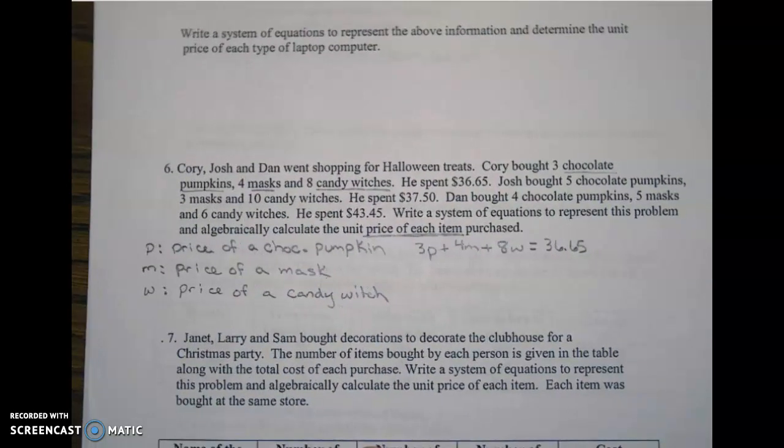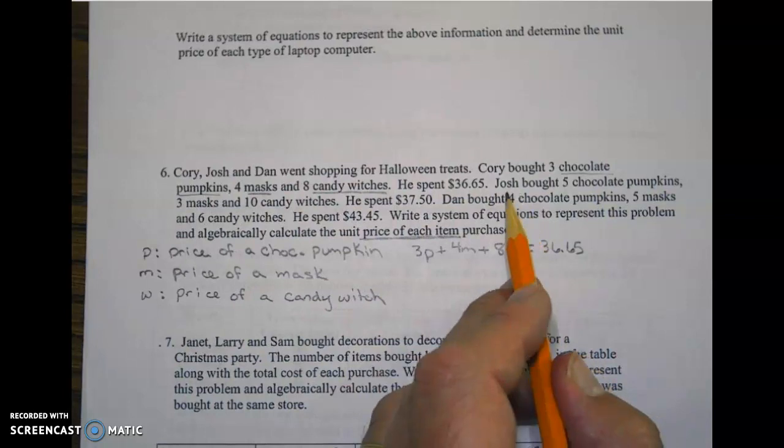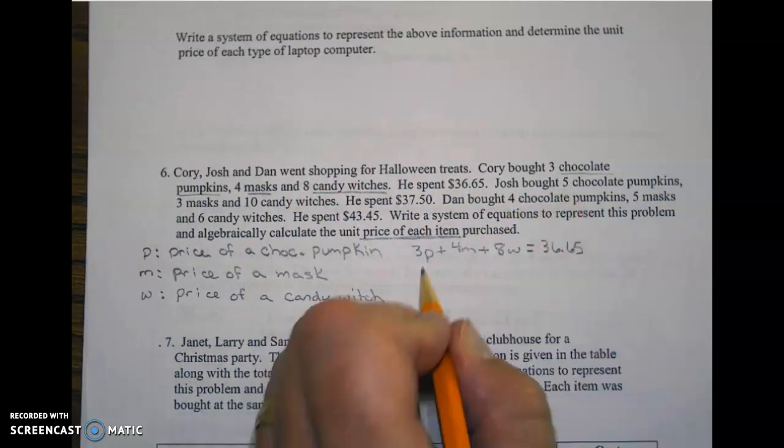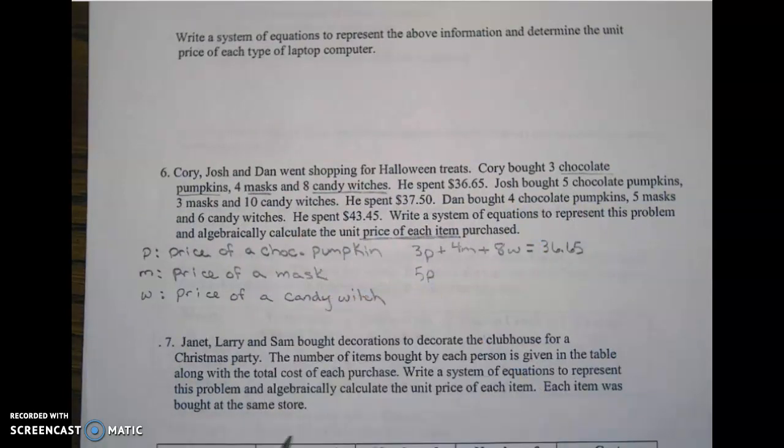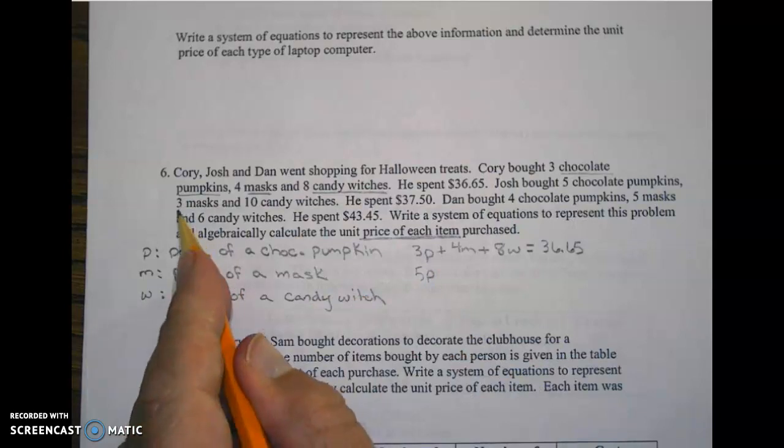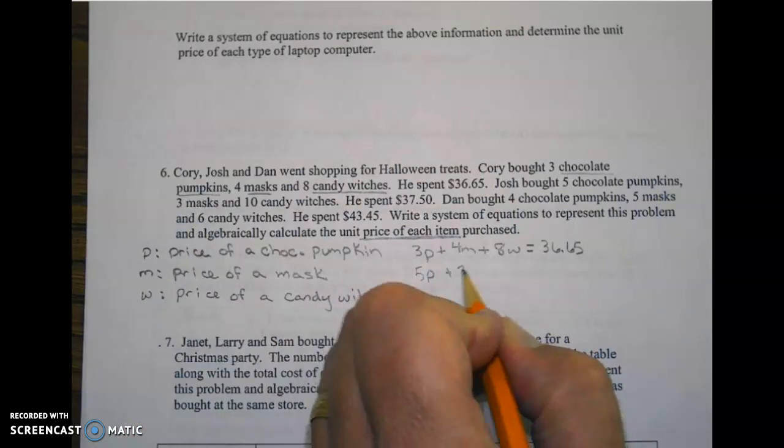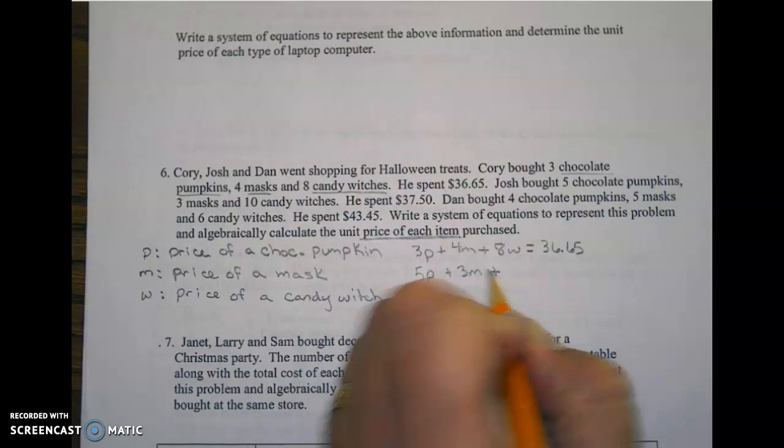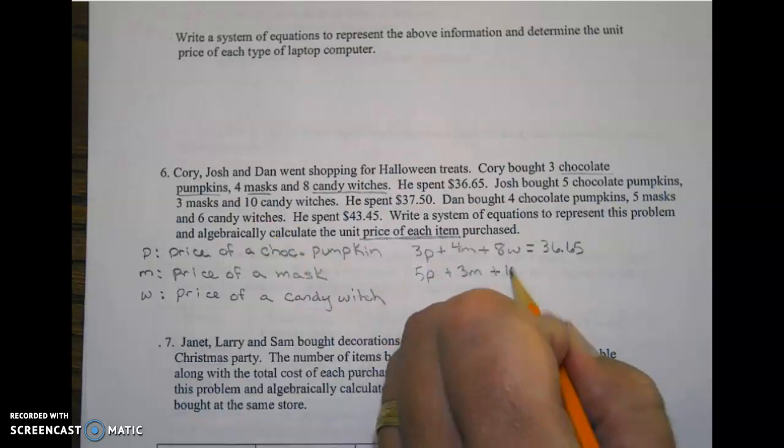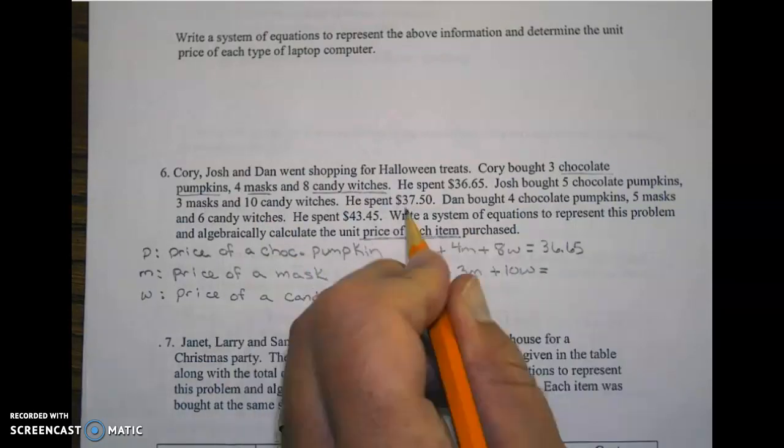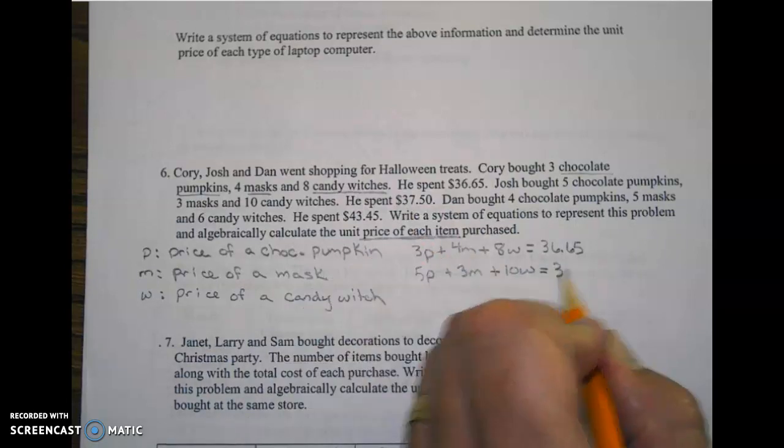Writing our next sentence, we have Josh. He bought 5 chocolate pumpkins, 3 masks, and 10 candy witches. He spent $37.50. So that's 5p plus 3m plus 10w equals 37.50.